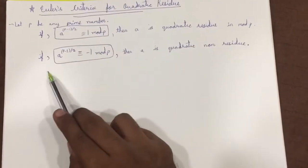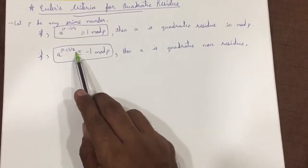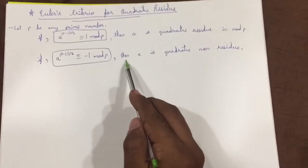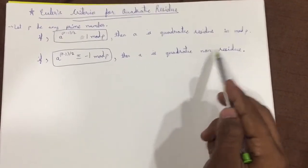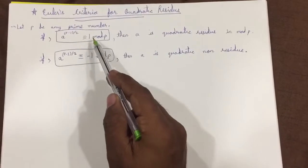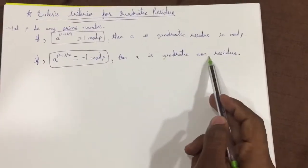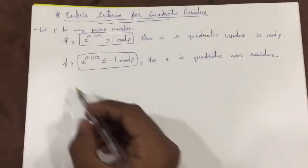If a raise to p minus 1 whole divided by 2 congruent to minus 1 mod p, then a is quadratic non residue. So if it is positive 1 it will be a residue, if it is negative 1 it will be a non residue.